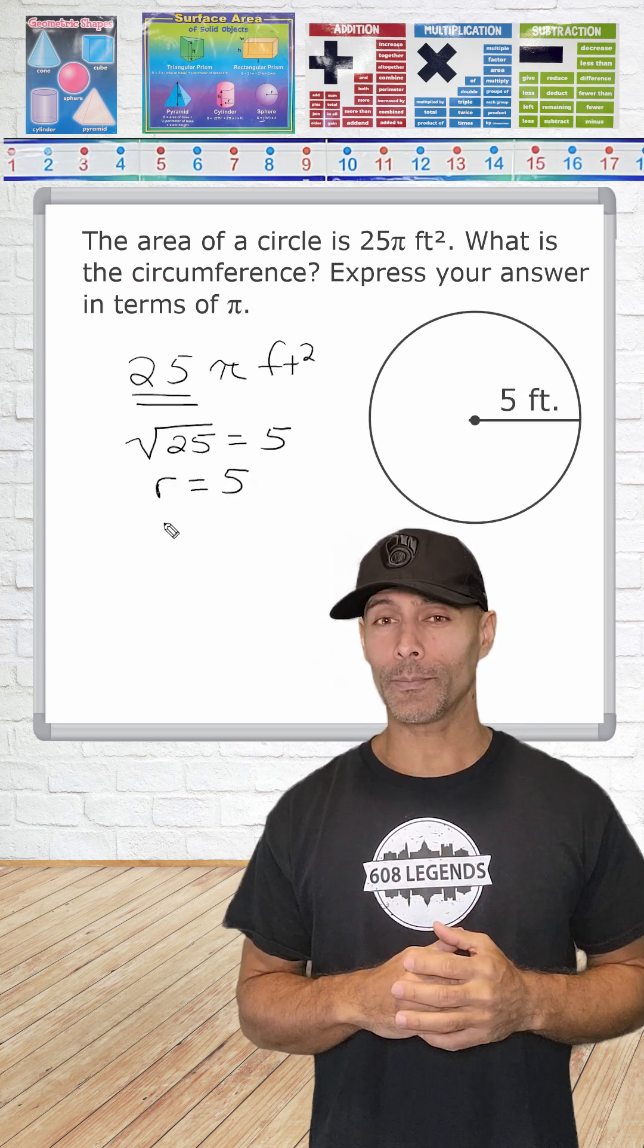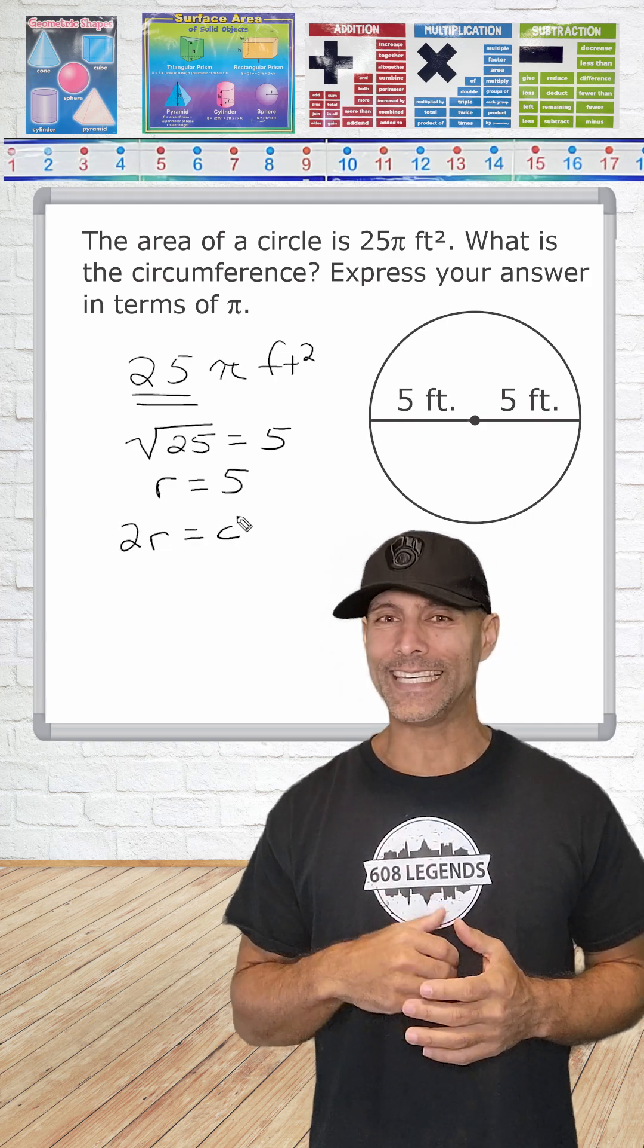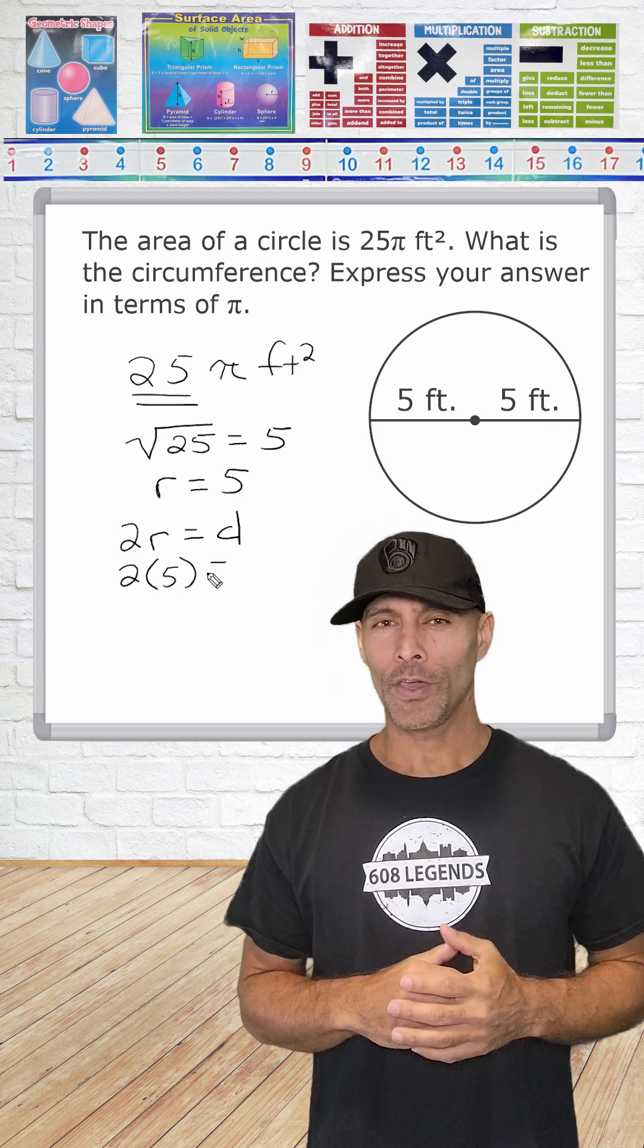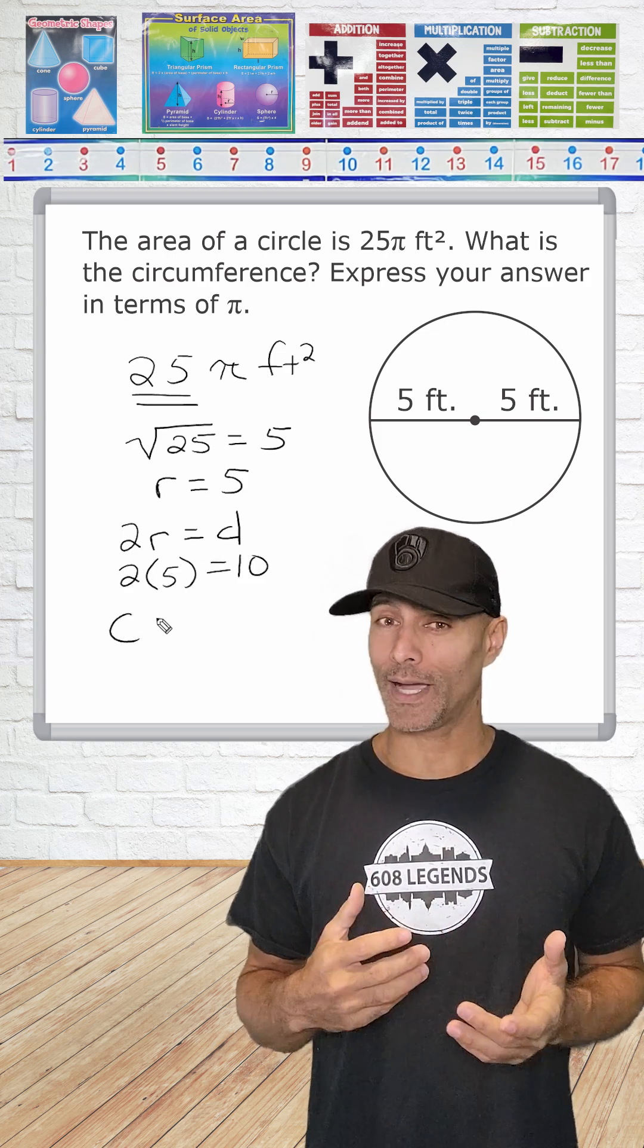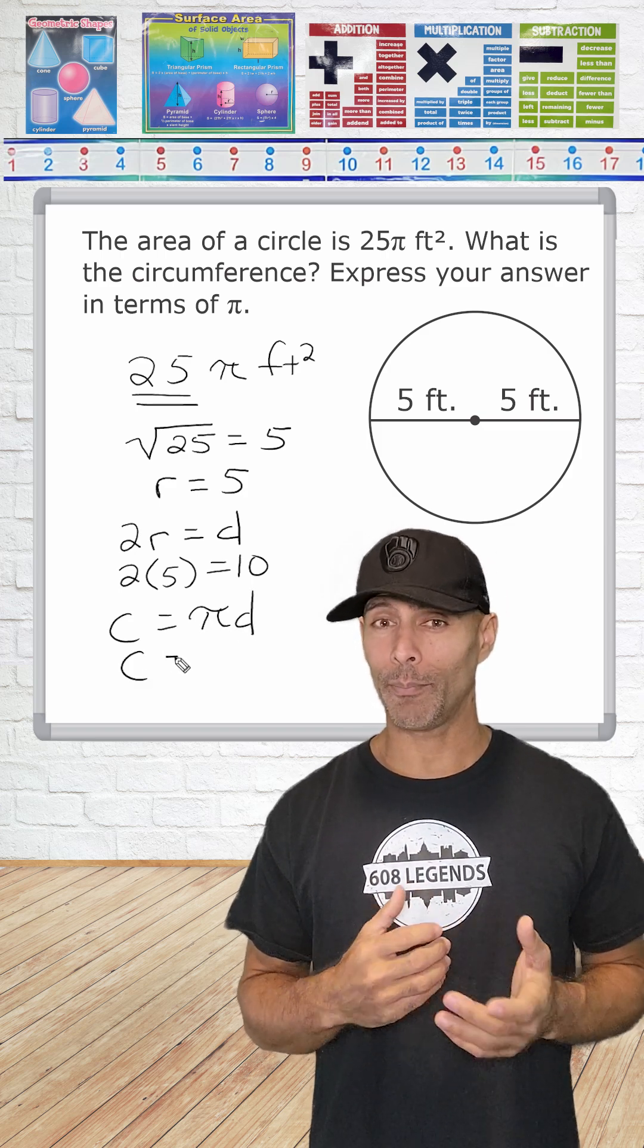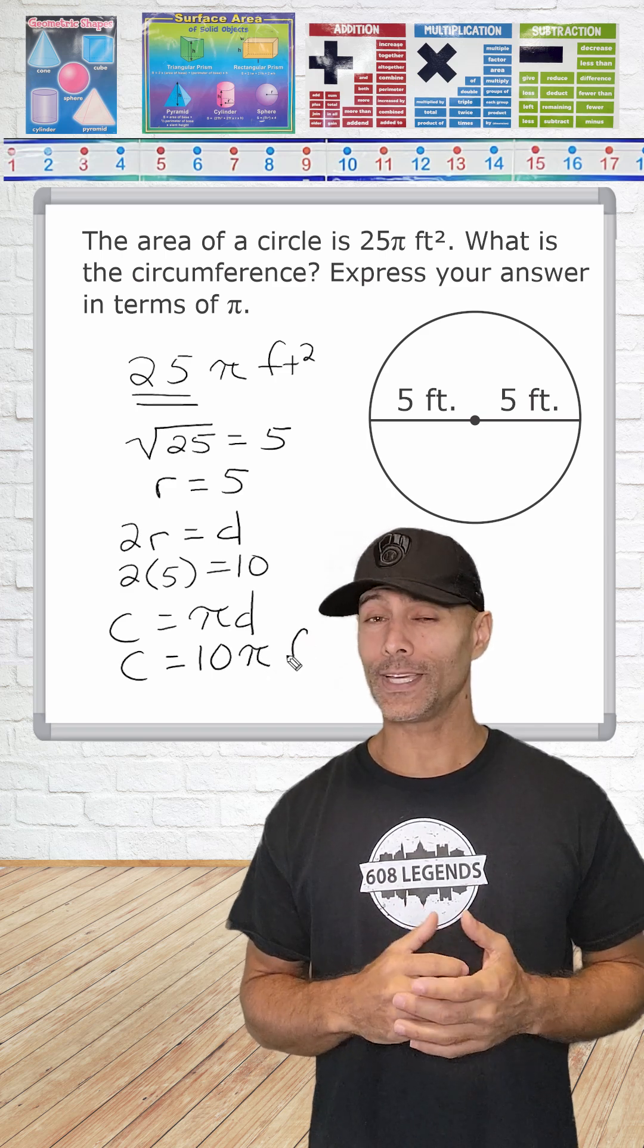Now, once you have determined what the radius of the circle is, all you have to do is double that number to get the diameter length of the circle, which in this case would be 10. The circumference of any circle is just π times the diameter. Since the diameter is 10, we multiply that by π. So 10π is the circumference of the circle in terms of π.